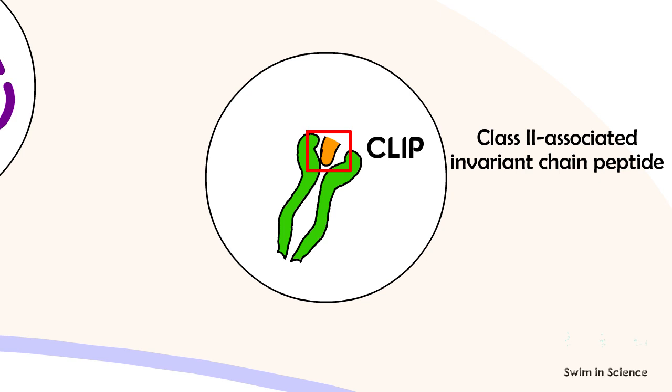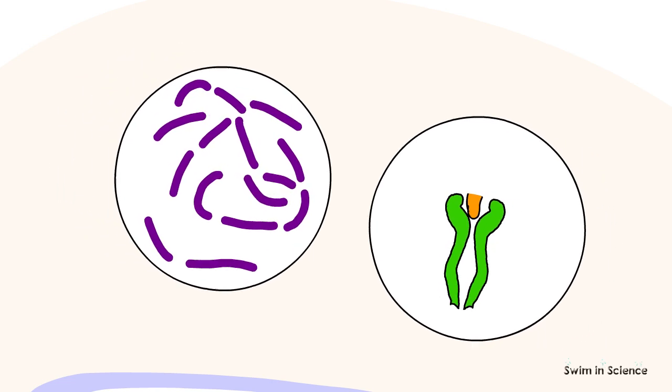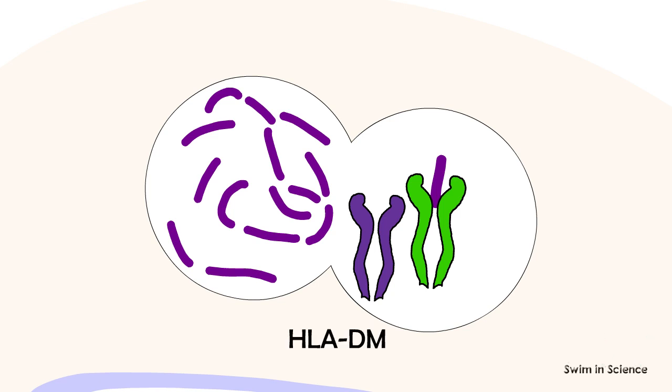that is, class II associated invariant chain peptide. Later, this complex encounters the antigenic peptide derived from the endosomal protein degradation pathway. Now, the CLIP is exchanged with an antigenic peptide, which is mediated by a chaperone called HLA-DM.